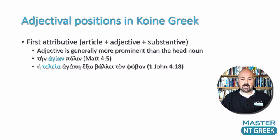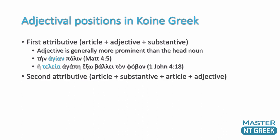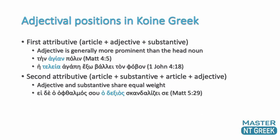There's also the second attributive position, where you get the article plus the substantive, then the article plus the adjective. When you get this construction, the adjective and the substantive share equal weight, which is part of why you get the article before both of them. For instance, 'if your right eye causes you to stumble,' or in Revelation 9:2, 'he has judged the great prostitute' — the prostitute, the great one. This is the second attributive position.